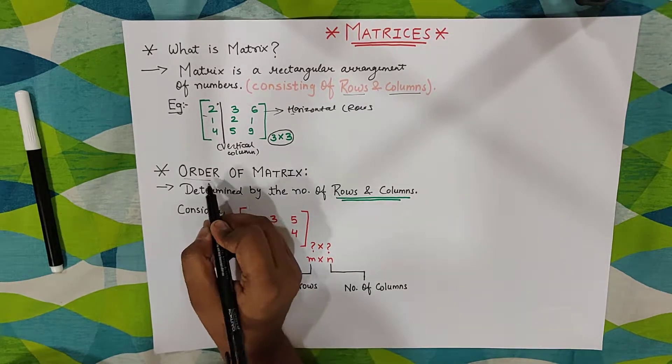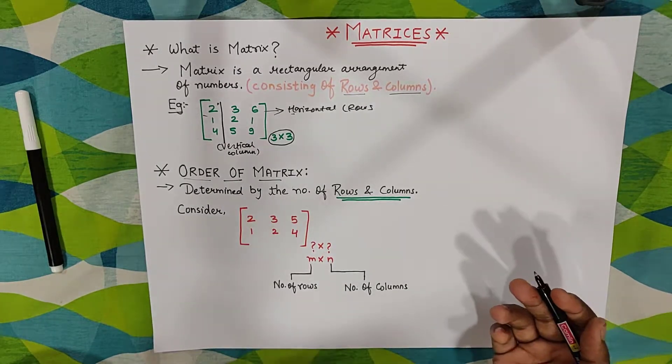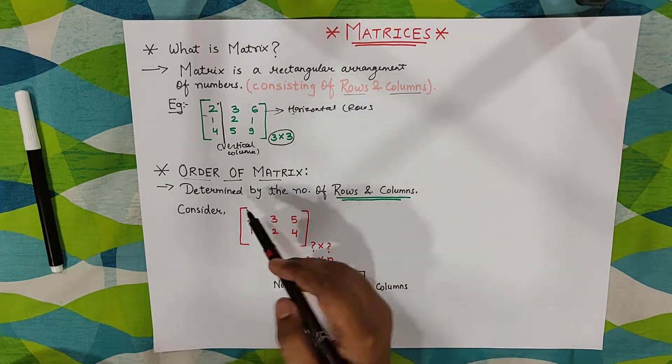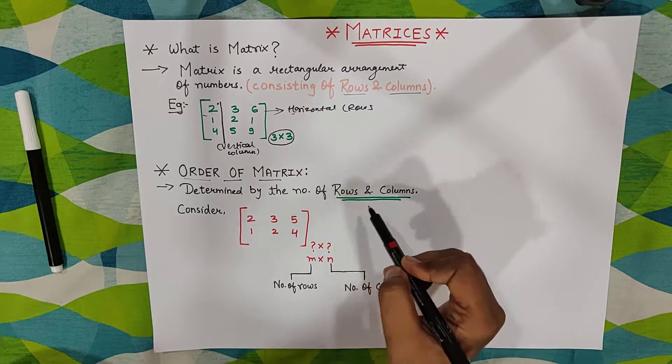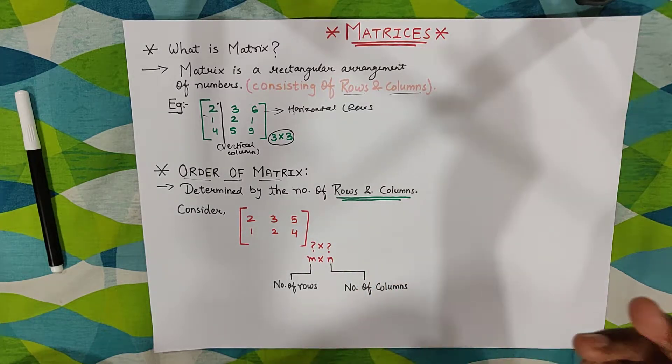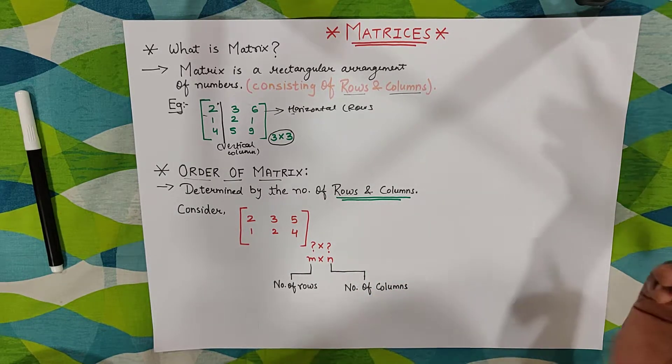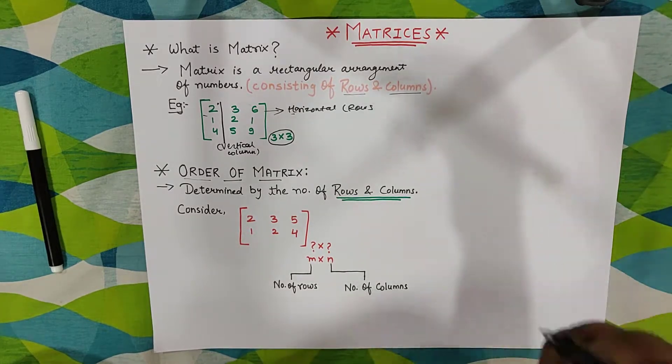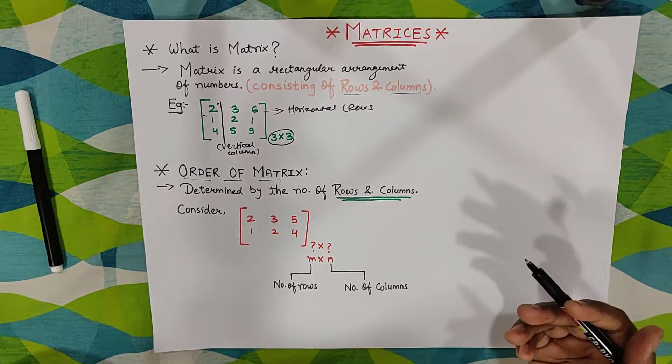Now let's start with order of matrix. What is the order of matrix? So order of matrix is basically determined by the number of rows and columns. If you know how many rows and columns are there, then you can tell the order of matrix.